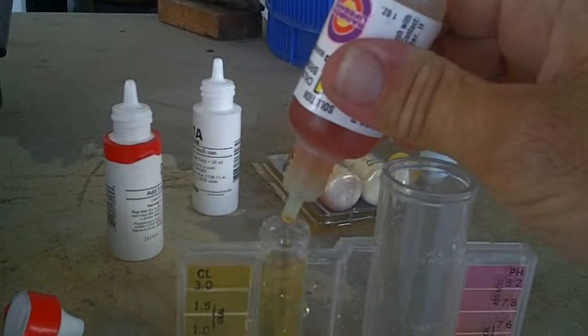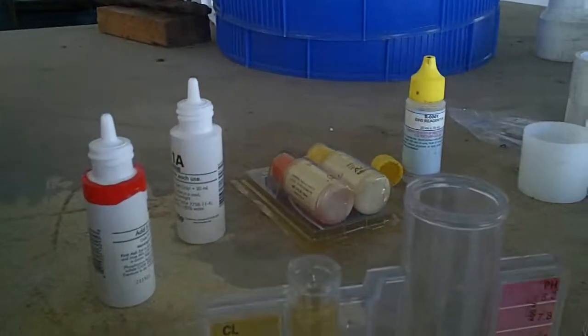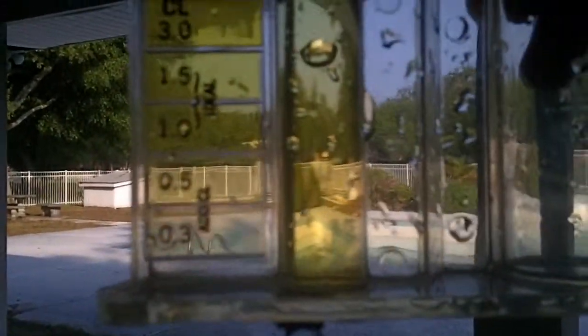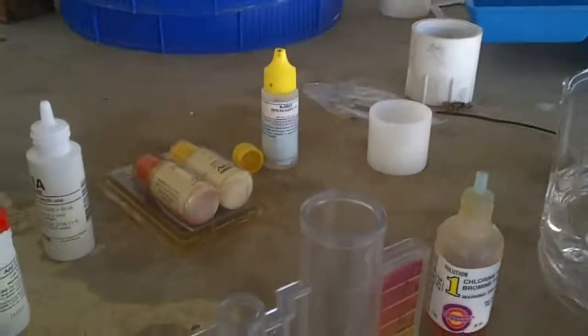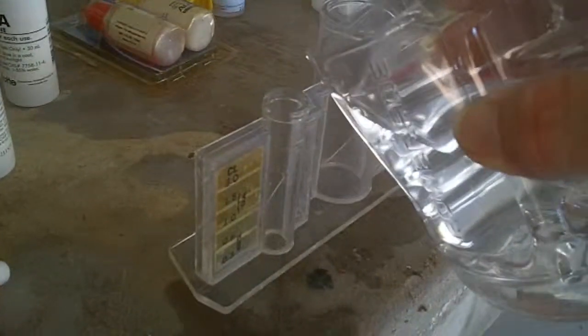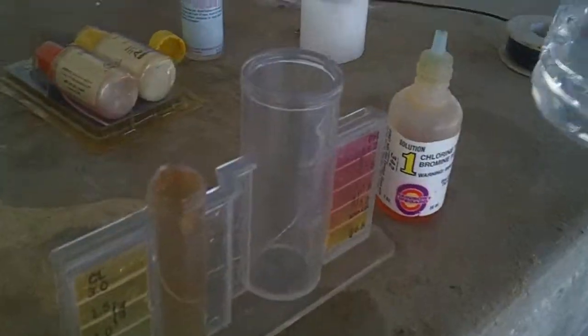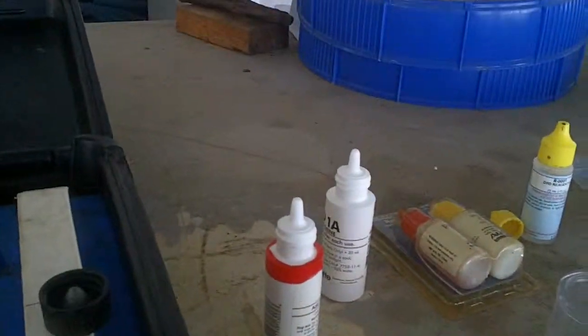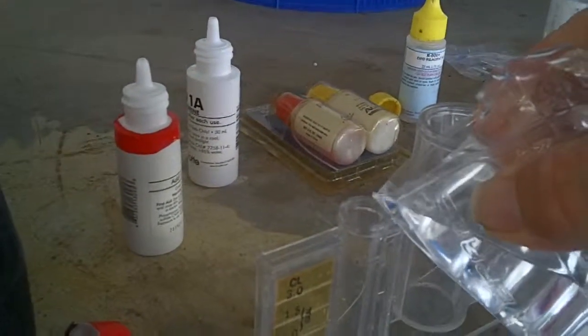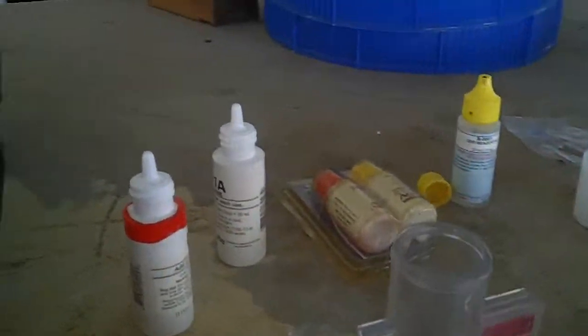All right. Swirl it around, and hold it up to the sun, and we'll see that it's showing about a 1.5. All right, pour that one out. So, that one's inaccurate. Rinse it out. Okay, that one's no good. It's going to show you that you have chlorine, but that's all.